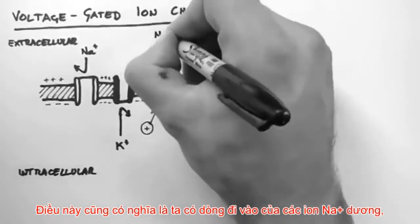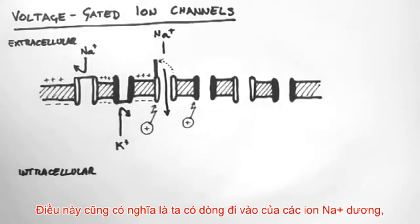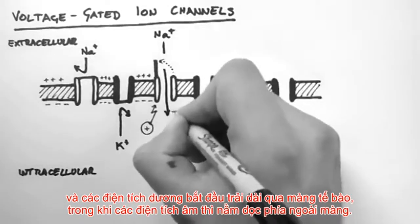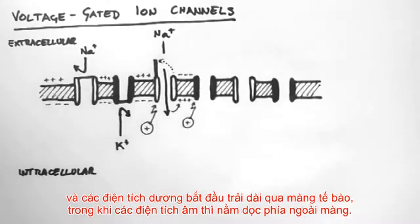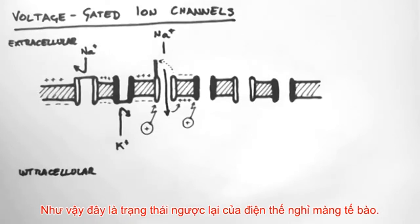This means there is an influx of positively charged sodium ions, and the positive charges start lining up across the membrane, with the negative charges lining up on the other side. So this is a reversal of the resting membrane potential.